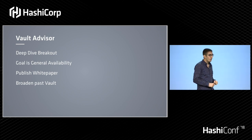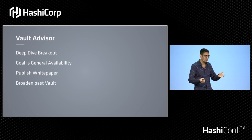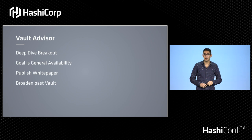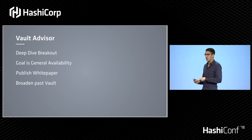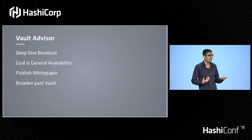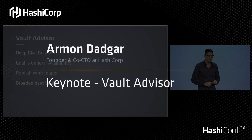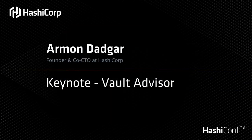The goal of the project is to get this to general availability. Today it's still very much a research project — we're actively recruiting beta testers, so if you're interested, please find John Curry. We're going to publish this as a white paper. Beyond that, what we realize is that this is not a uniquely Vault problem. Anything that's security software is only as good as its configuration. So how do we look at broadening this beyond just Vault and really look at what's the discrepancy between how security software is configured and how it's used?